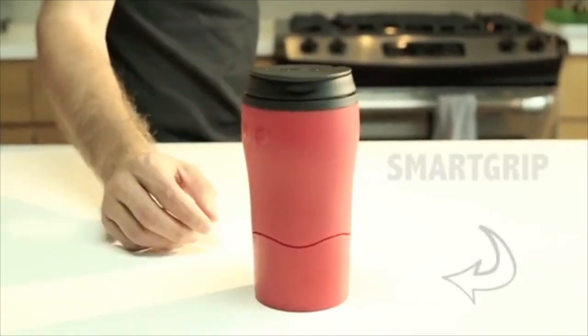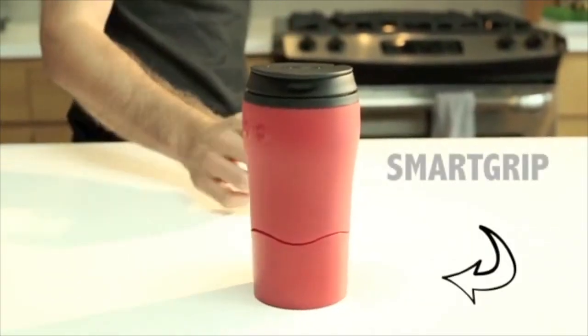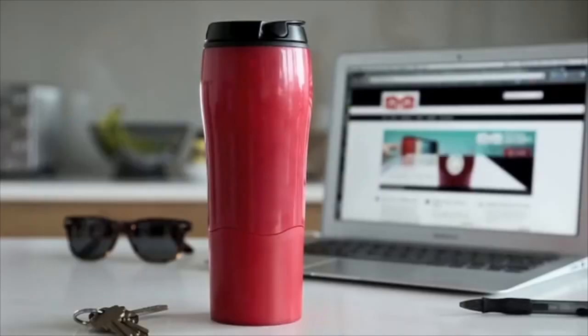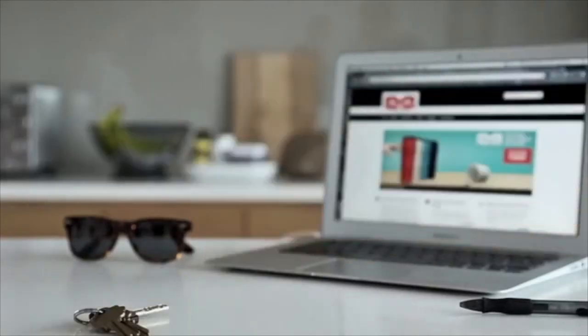So how does Mighty Mug work? Once placed down, a powerful air vacuum is created within SmartGrip space. In this position, Mighty Mug can resist knocks from all angles.